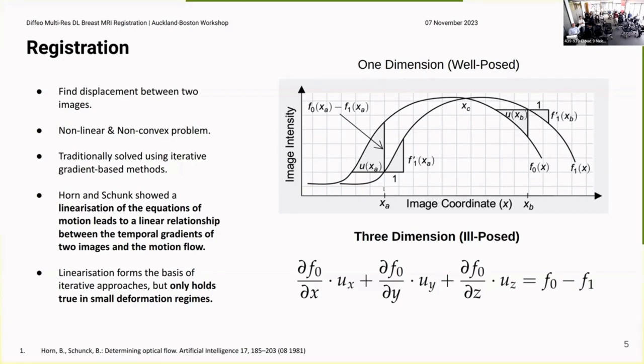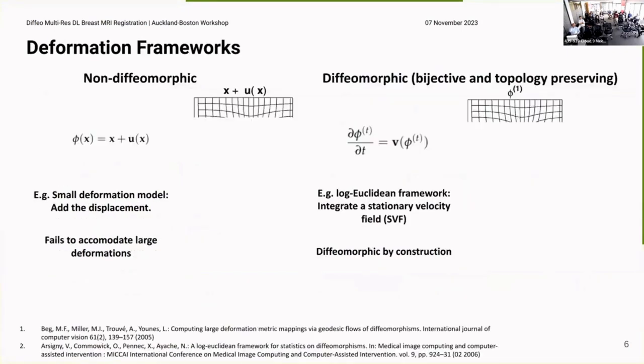This becomes a lot more complicated in three dimensions where you end up with an ill-posed problem if you need an additional constraint. Also this linearization only holds true when the deformation is small. And as I've mentioned, the deformation between the breast poses is quite large.